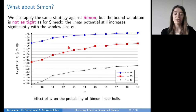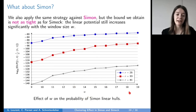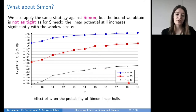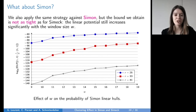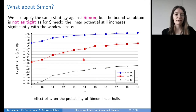For Simon, we studied the effect of the window size in linear cryptanalysis and observed that the increase is quite important even for large values of W. This is probably because the rotation amounts for Simon are bigger — Simon has a rotation of 8 bits while CIMEC's biggest rotation is 5. So our lower bound for Simon's linear hulls is likely not as tight as for CIMEC, and further work can probably improve our results.